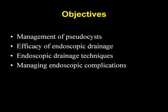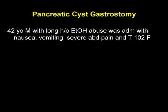We'll start off with a case — a pancreatic cyst gastrostomy. It's a 42-year-old gentleman with a long history of alcohol abuse who was admitted with nausea, vomiting, severe abdominal pain, and a fever. He's a classic patient. He's got symptoms of gastric outlet obstruction — the nausea and the vomiting — as well as pain and fever. Here's the CAT scan showing this gentleman has chronic pancreatitis as well as a large pseudocyst in the body of his pancreas.